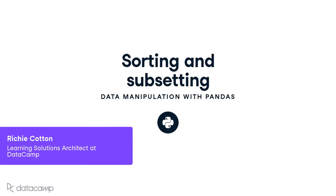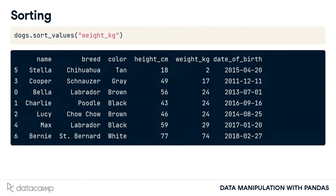In this video, we'll cover the two simplest and possibly most important ways to find interesting parts of your data frame. The first thing you can do is change the order of the rows by sorting them, so that the most interesting data is at the top of the data frame. You can sort rows using the sort_values method, passing in a column name that you want to sort by.